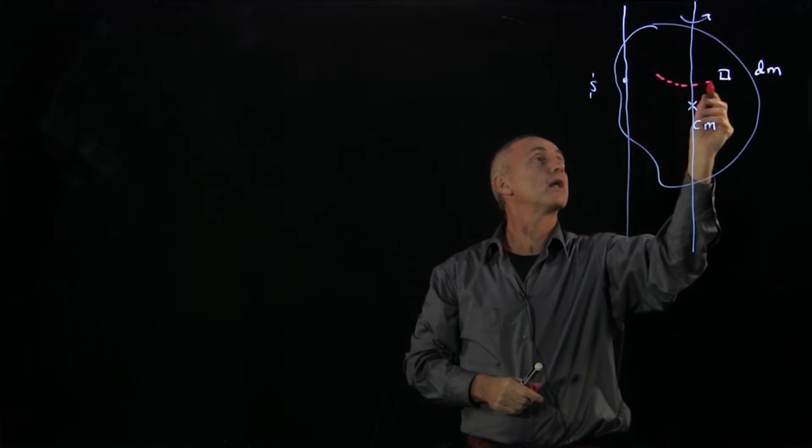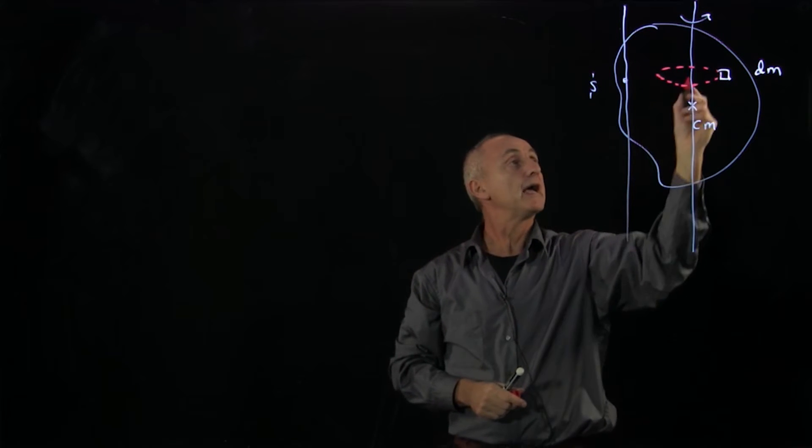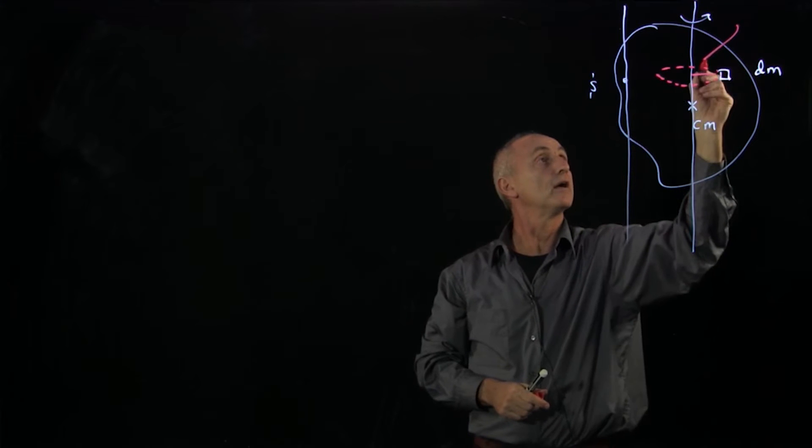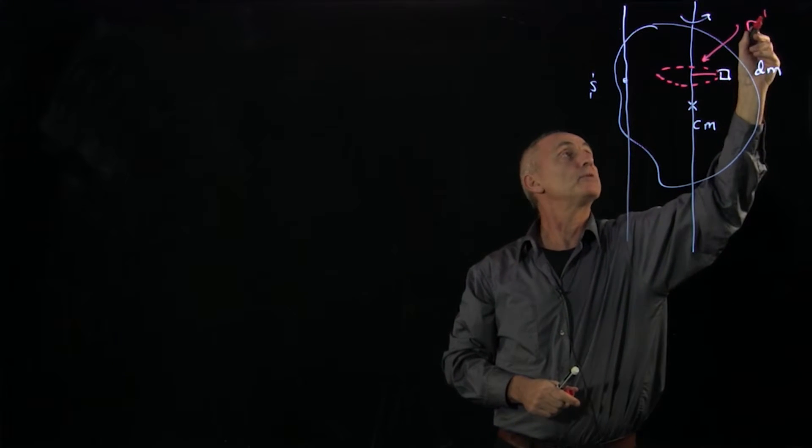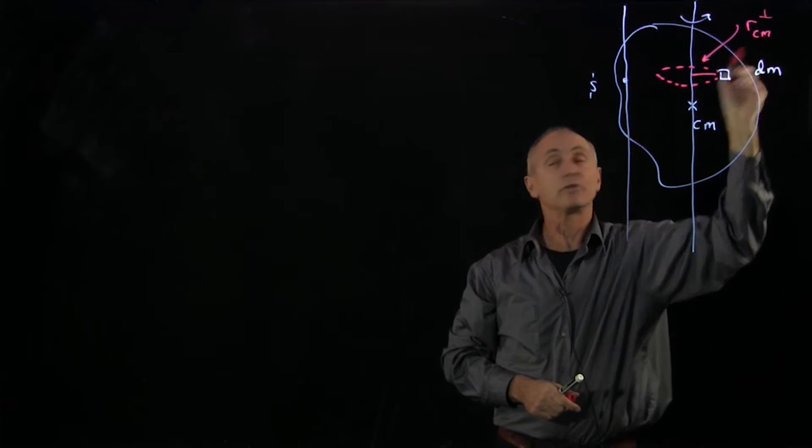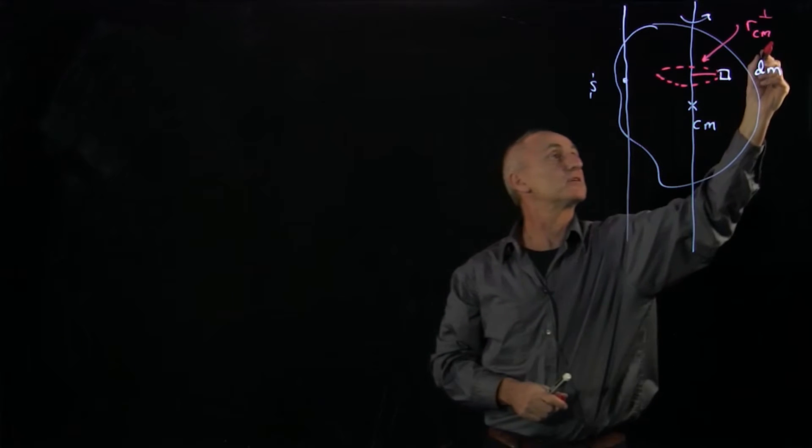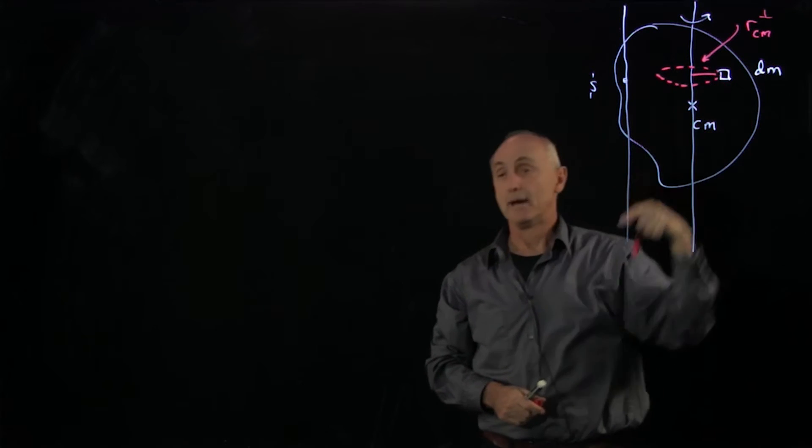Well, that object is undergoing a little bit of circular motion. And this distance here is what we call the perpendicular distance about that axis. And let's indicate this is for our element dm.